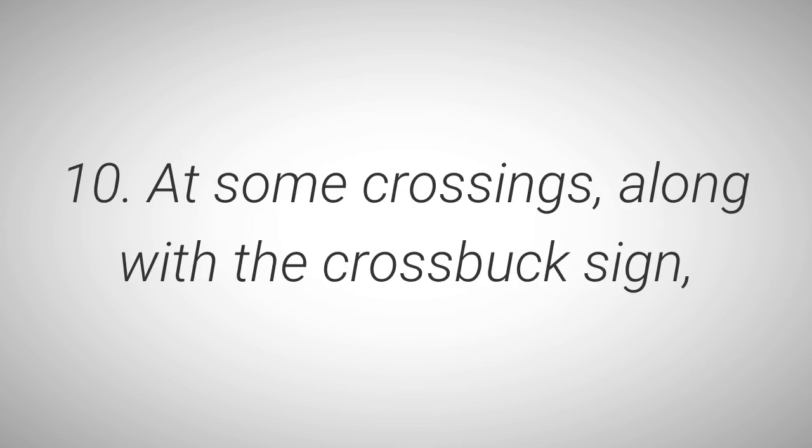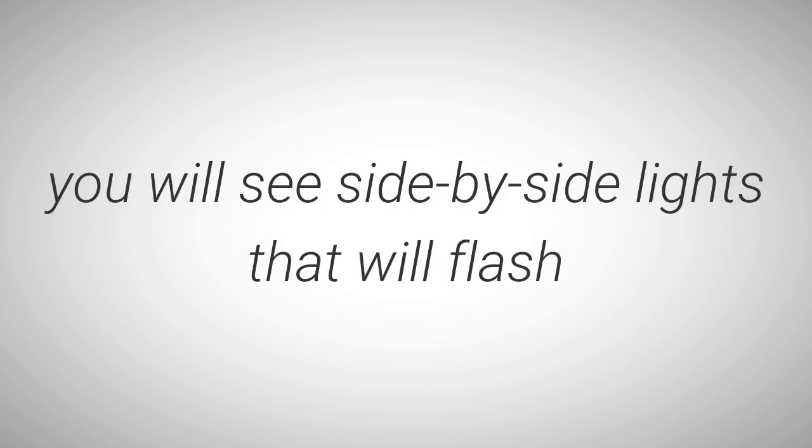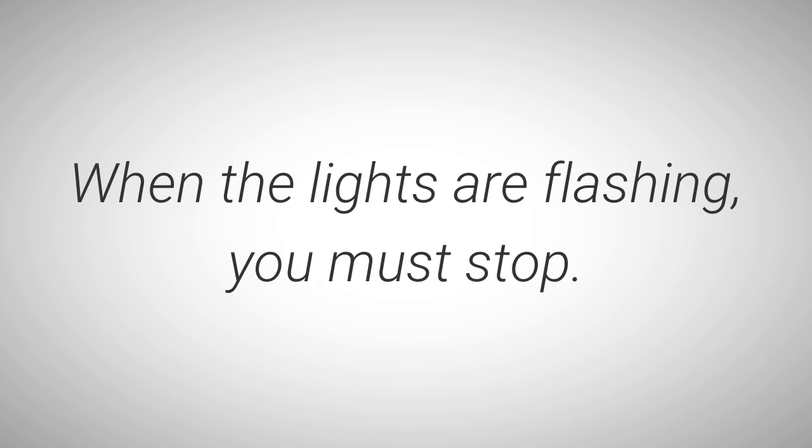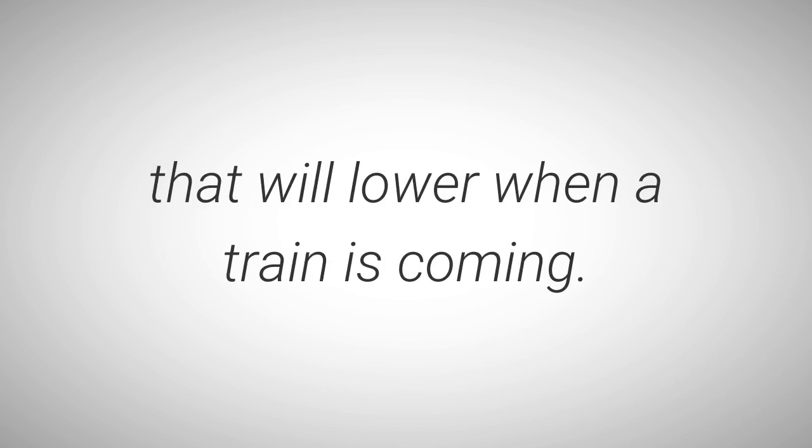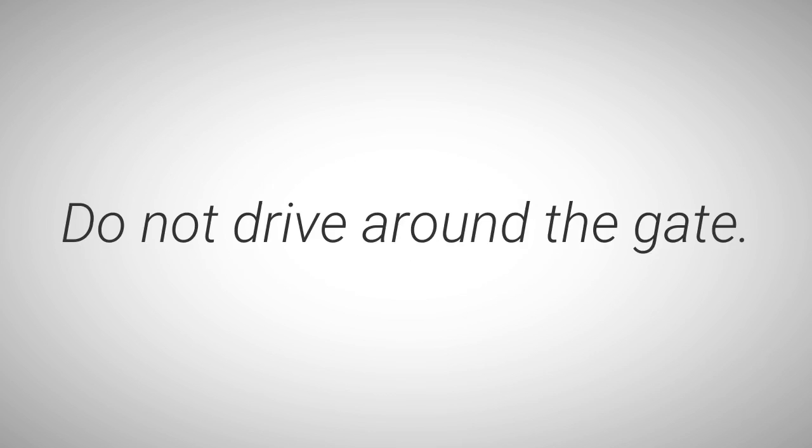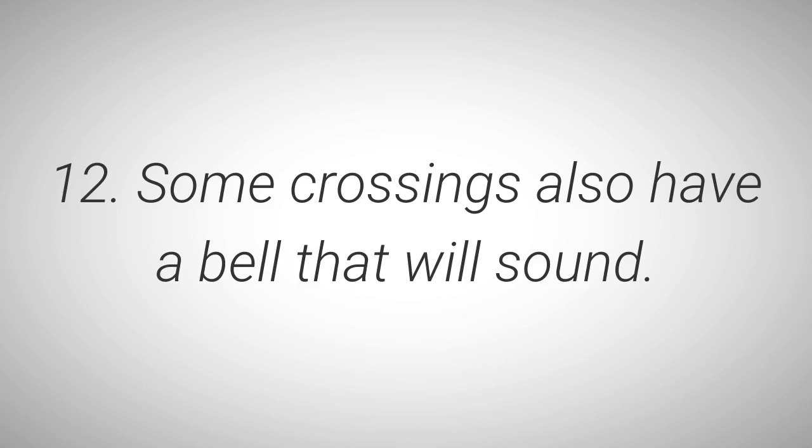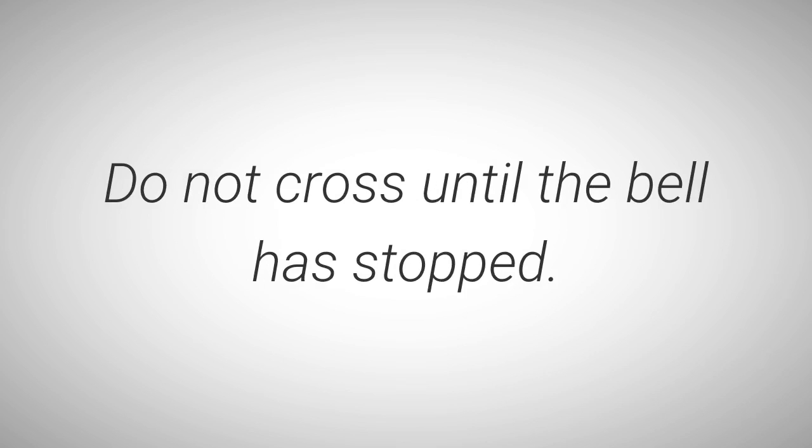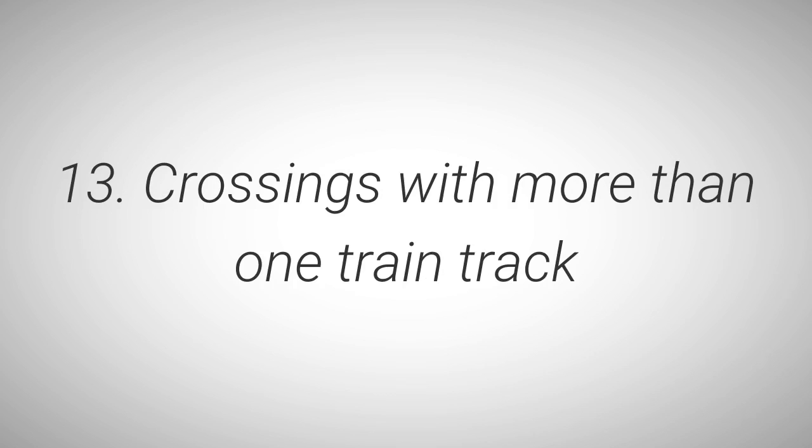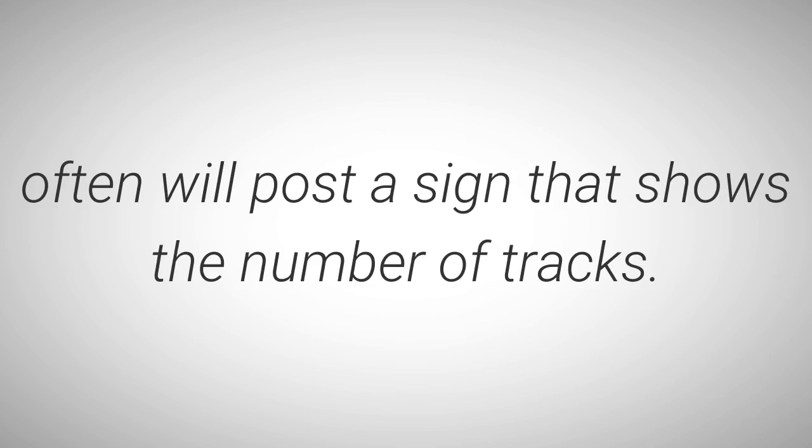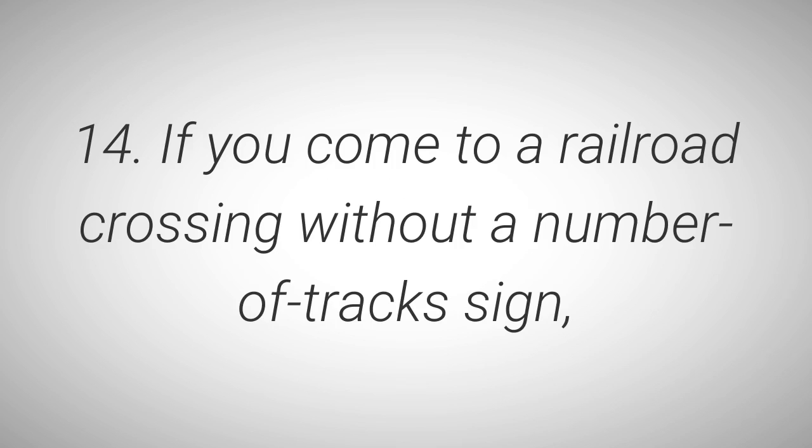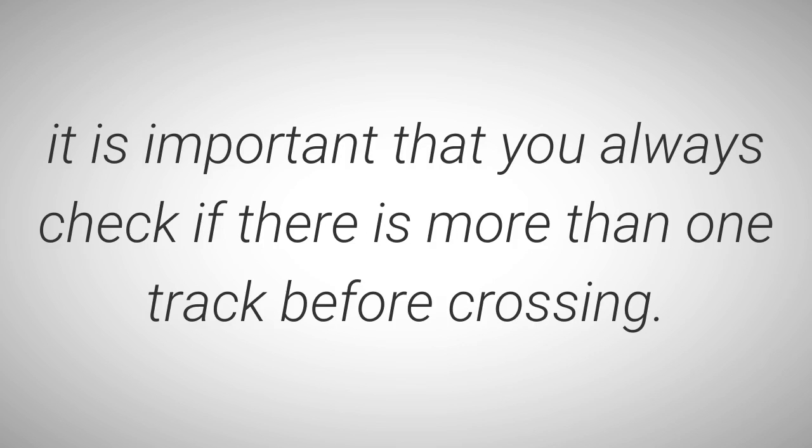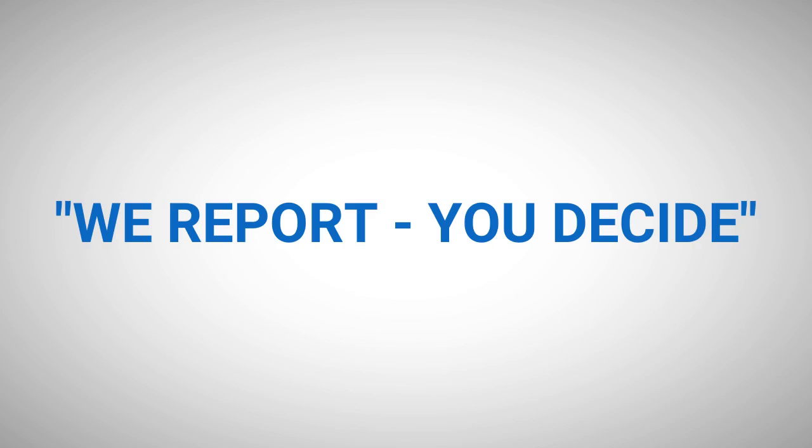10. At some crossings along with the cross buck sign you will see side by side lights that will flash when a train is approaching. When the lights are flashing you must stop. 11. At some crossing there is also a crossing gate that will lower when a train is coming. Do not drive around the gate. 12. Some crossings also have a bell that will sound. Do not cross until the bell has stopped. 13. Crossings with more than one train track often will post a sign that shows the number of tracks. These signs warn you that there is more than one track and there may be more than one train crossing. 14. If you come to a railroad crossing without a number of tracks sign, it is important that you always check if there is more than one track before crossing. We report, you decide.